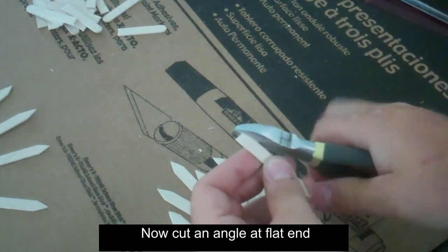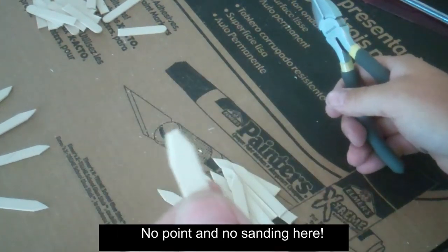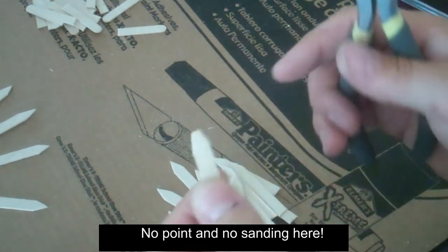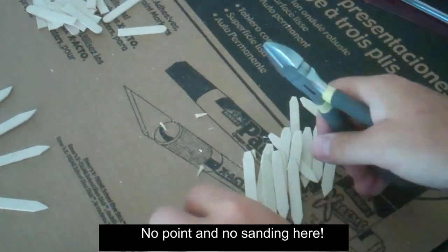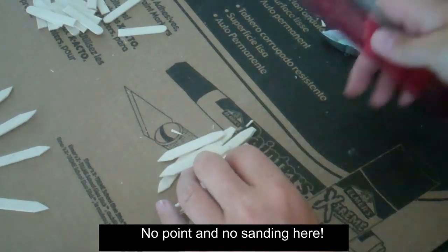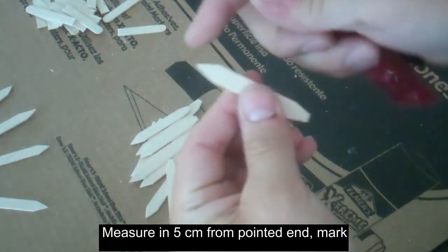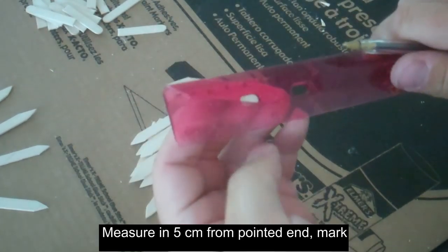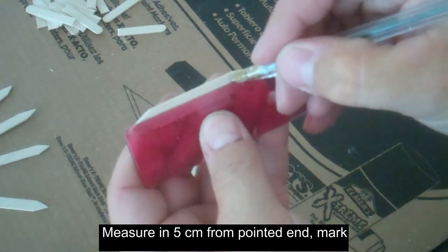When that is done, take your pieces and make a cut on the flat end. Don't cut to a point. Just angle it in to make fitting the pieces of the mirror easier. Now take that piece and from the pointed and sanded end measure in 5 cm and make a small mark on the stick.